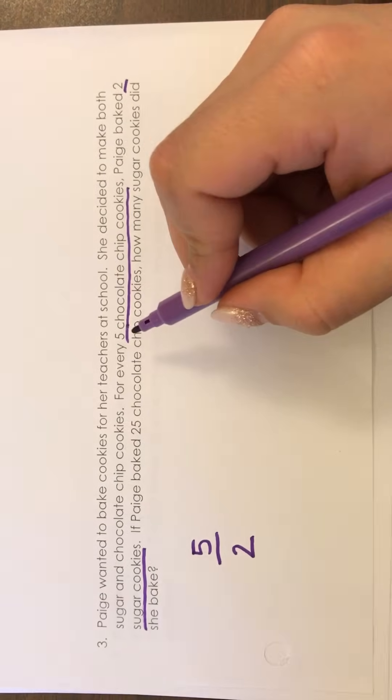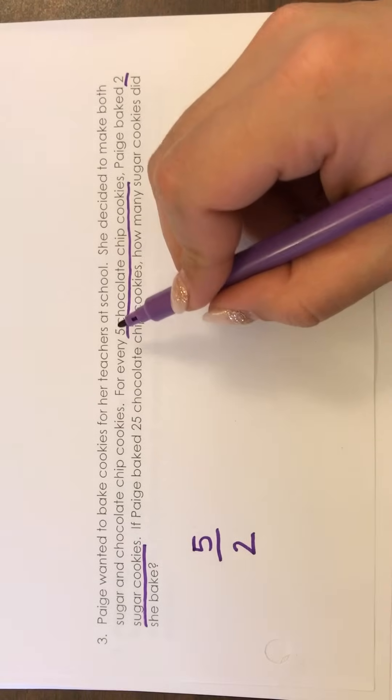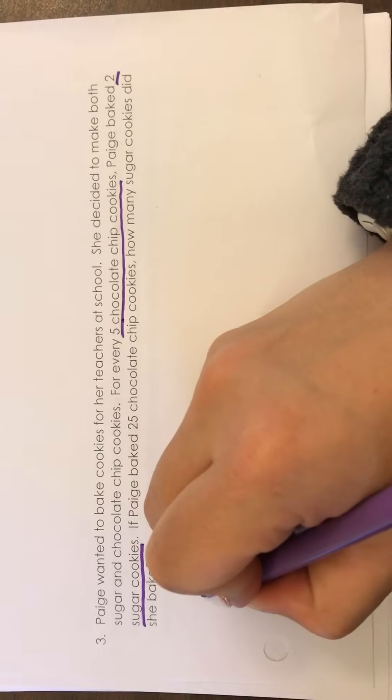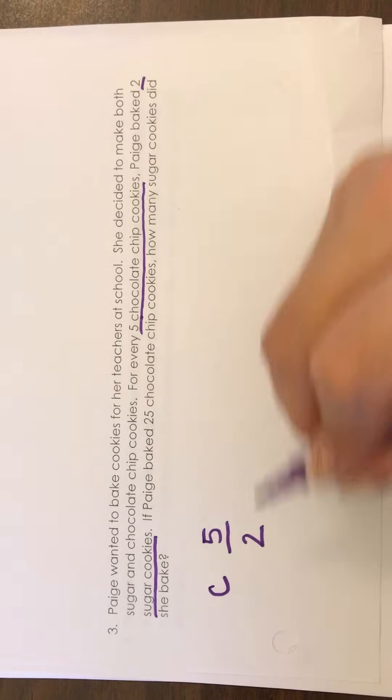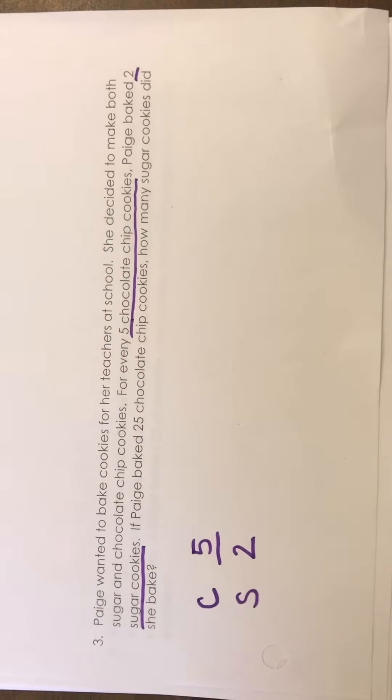So it says here that it's five chocolate chip cookies. So I'm going to put C for chocolate chip cookies and it says two sugar cookies so I'm going to put S next to the two for sugar cookies.